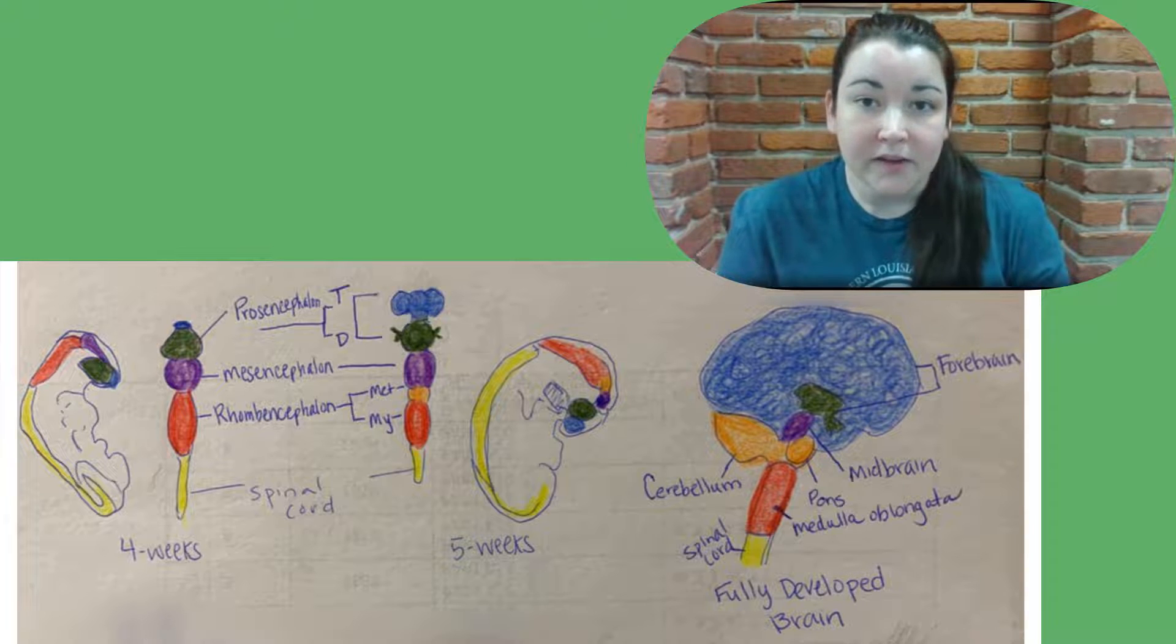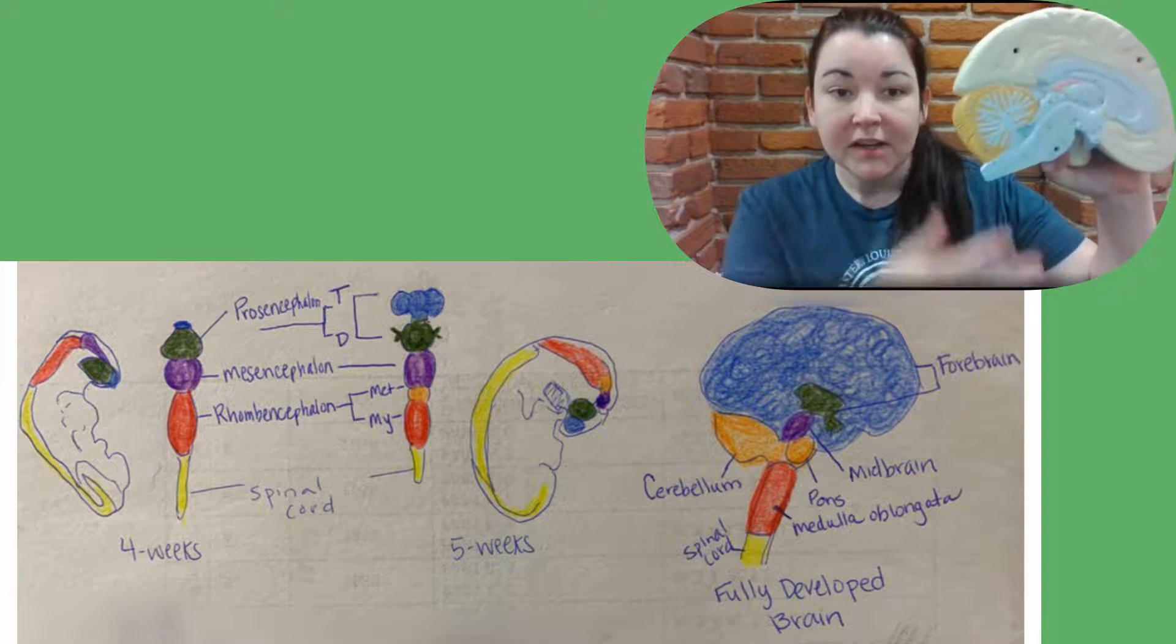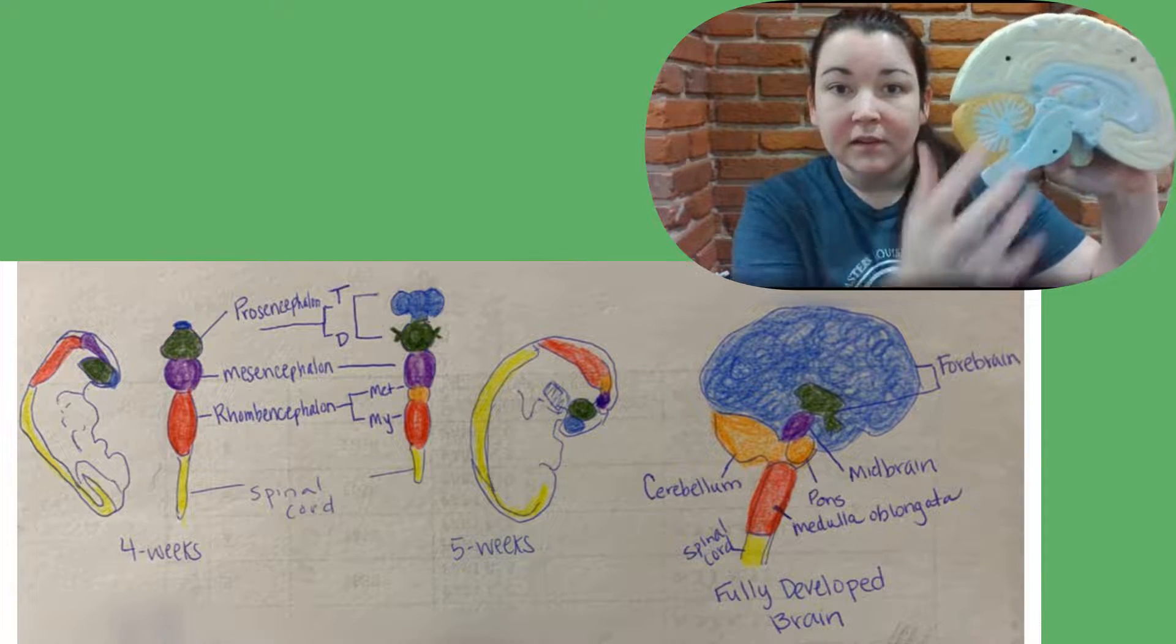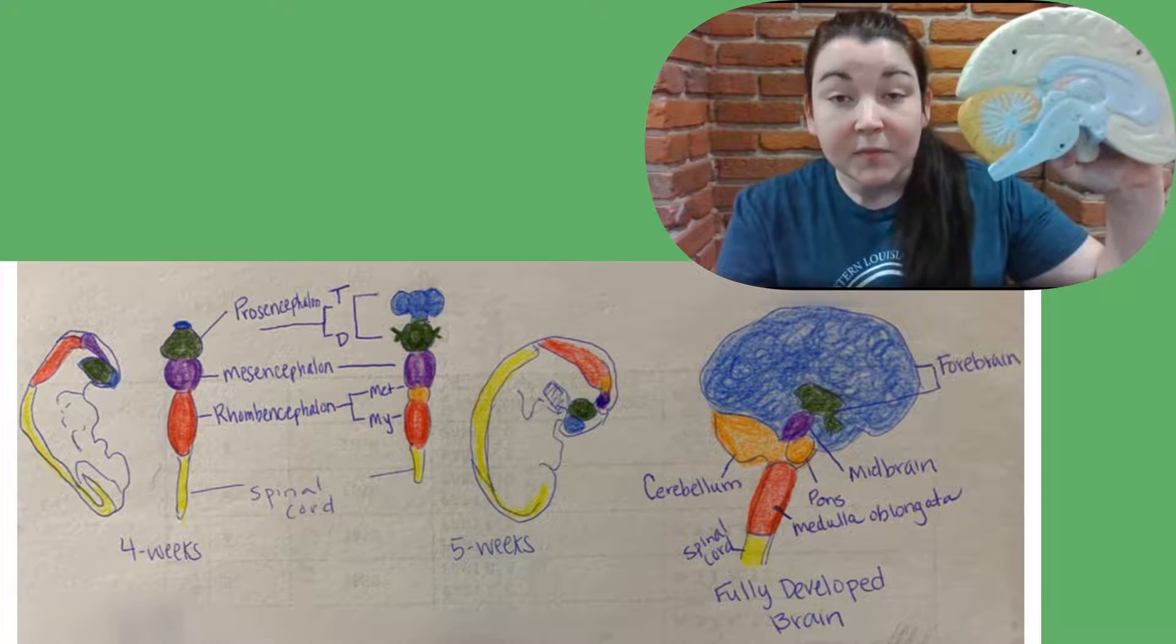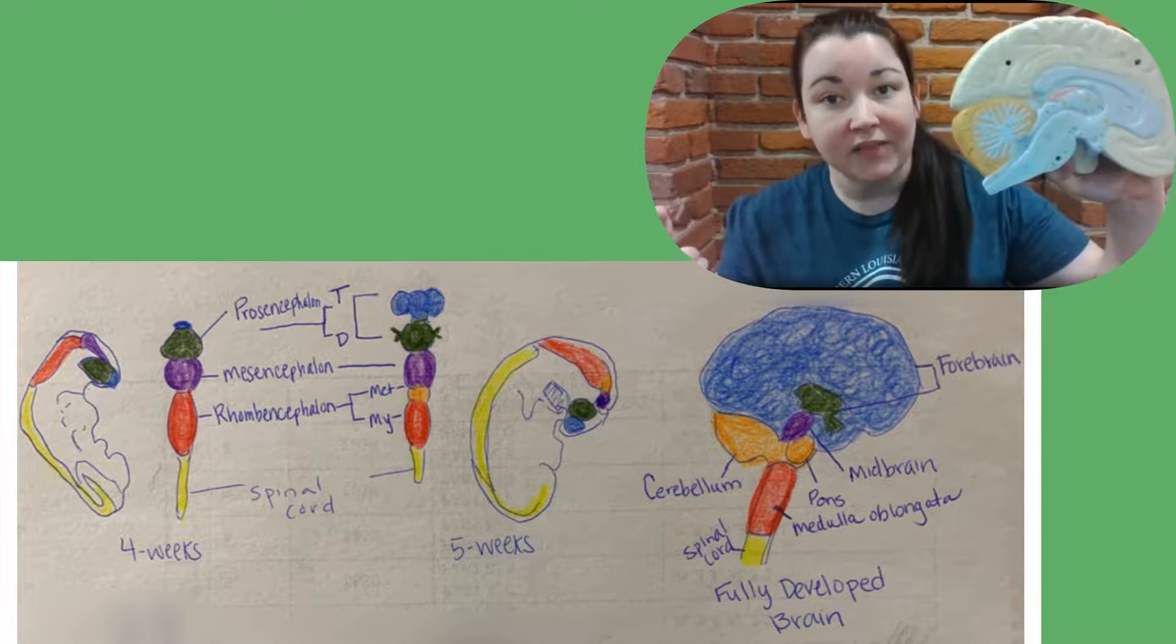The last primary region is the rombencephalon, which is your hindbrain. The hindbrain portion is here. The rombencephalon subdivides at five weeks. It forms the metencephalon, and it also forms your myencephalon.